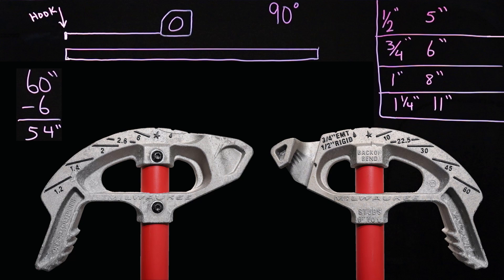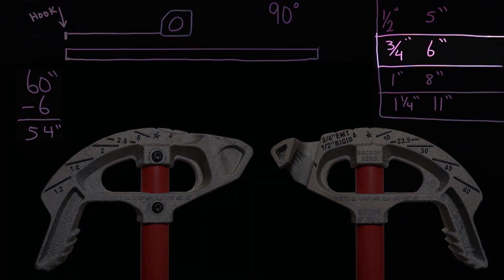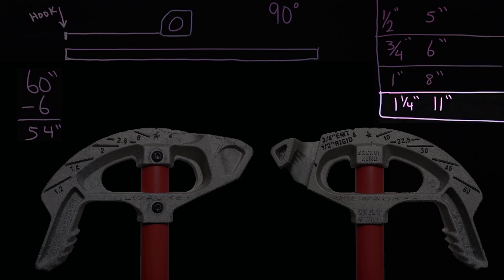Deduct from your tape, from your measurement, six inch for three-quarter, eight inch for one inch, 11 inch for inch and a quarter.